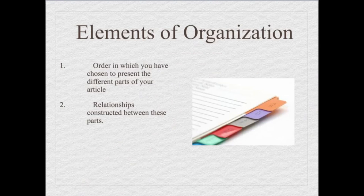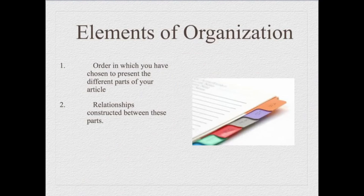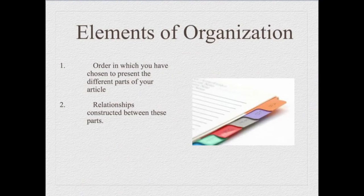To get started organizing, the first thing you need to do is determine what order you've chosen to present the different parts of your article. The outline we've talked about before in terms of crafting the body is going to come into play here — to determine what information we want to come first, second, third, fourth, et cetera. Once you've made that determination, you need to show the relationship between those parts, and the construction of that relationship is where transitions come in.